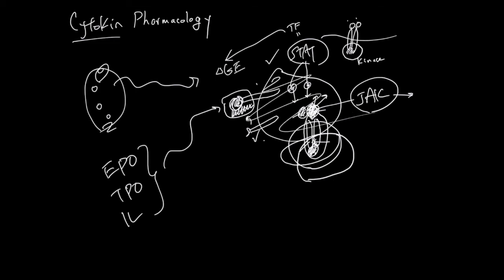And because of this dimerization mechanism, people have designed drugs that bind to the first cytokine receptor. And when this changes its shape, the shape is not that good, and this not-so-good shape is going to prevent the second cytokine receptor from dimerizing.